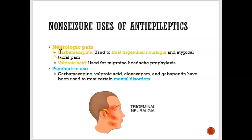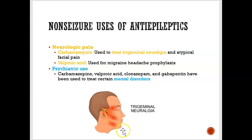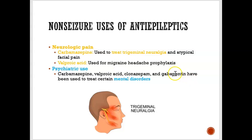Many anticonvulsant medications also have non-seizure uses. Carbamazepine is used to treat trigeminal neuralgia — severe facial pain caused by inflamed nerves — which can make even opening the mouth or brushing teeth extremely painful. Valproic acid is also used for headaches. Other anticonvulsant medications can be used to treat mental disorders such as depression.